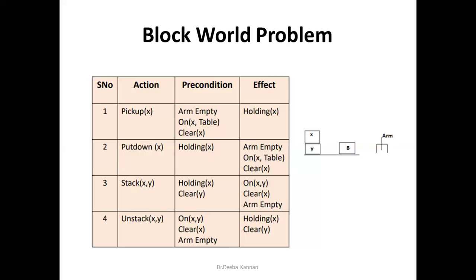The put-down function places block X on the table. The precondition is that the arm head is holding X. The after-effects are: X will be placed on the table, the arm head will be empty, and X will be clear since it is the topmost block with nothing above it.